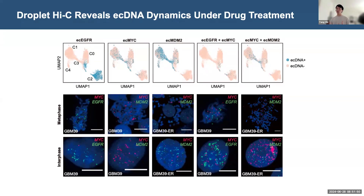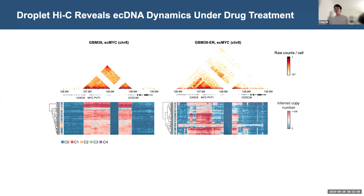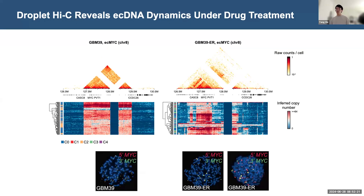We next focused on the shared MYC ecDNA before and after treatment. At the pseudo-bulk level, this ecDNA has a very clear boundary before treatment, while the boundary becomes more fuzzy after drug treatment. This variation actually reflects heterogeneity at the single-cell level: when we plot the local interactions within each cell, both the length and even the internal structure of the ecDNA become different in GBM-39 after treatment. To validate this, we performed single-molecule FISH using probes targeting the 5' and 3' regions, and the proportion of 5' and 3' signals differs in GBM-39 after treatment but not before, further validating that drug treatment can shape the structure of existing ecDNA, possibly through a chromothripsis process.